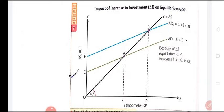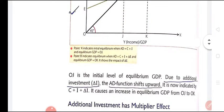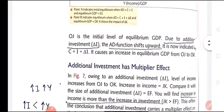Aggregate demand is equal to C plus I as per the two-sector model in the short run. If additional investment is done, it means producers are ready to invest more or change their level of investment. In this case, the aggregate demand curve will move upwards, depicting C plus I along with the change in investment. So the aggregate demand curve shifts upward when additional investment takes place.